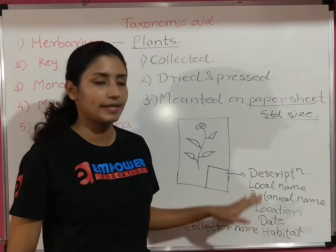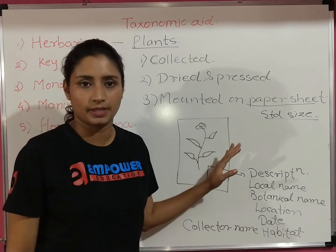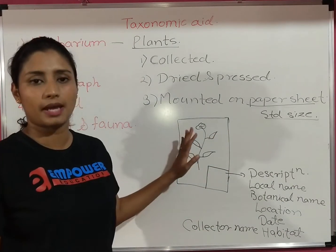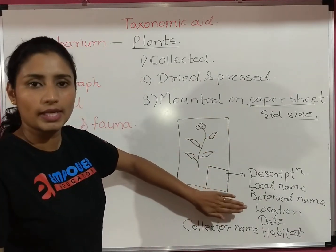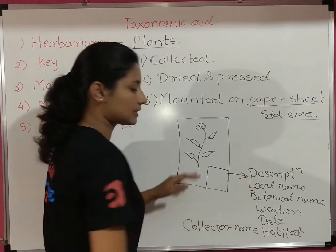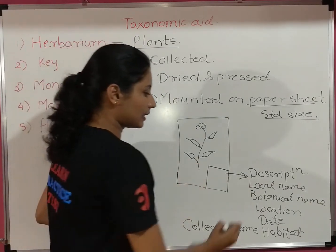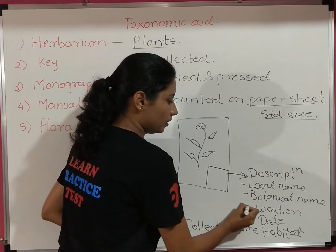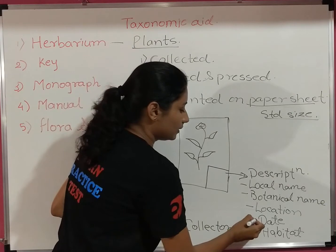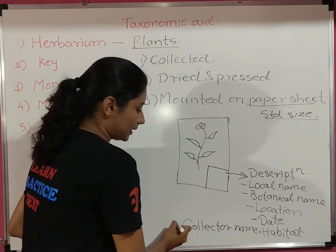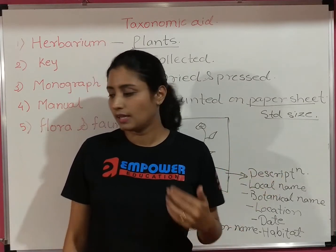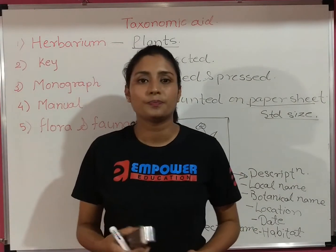So to summarize: in a herbarium, a plant is dried, pressed, then mounted on a white paper sheet of standard size. On the right lower corner, a description is given — local name, botanical name, location, date, habitat, and collector name. That is about herbarium.